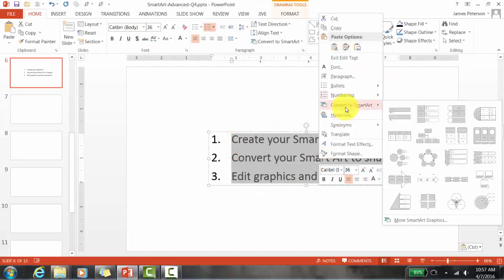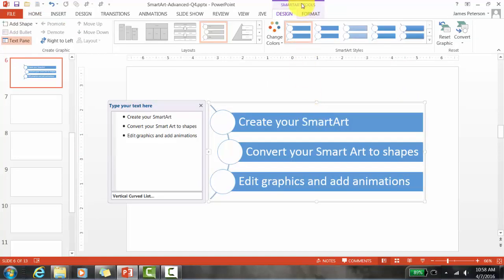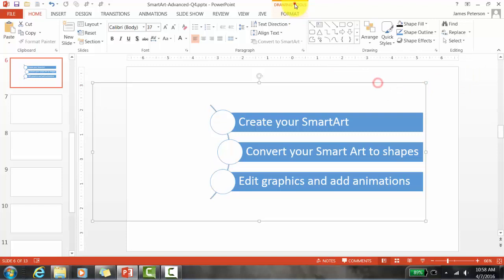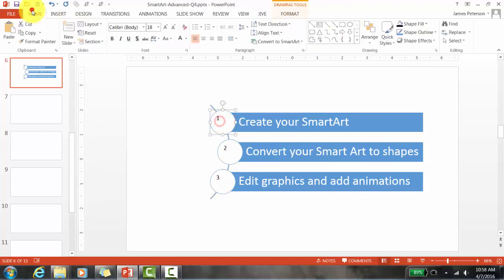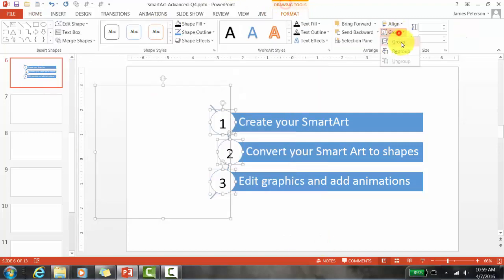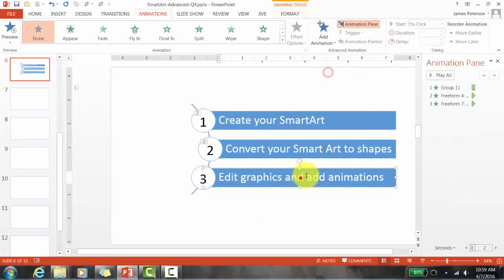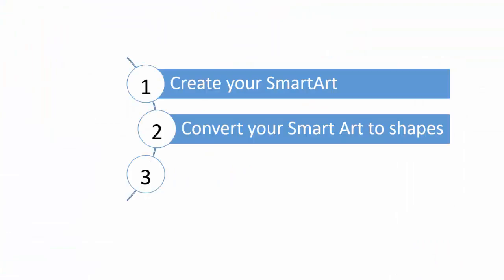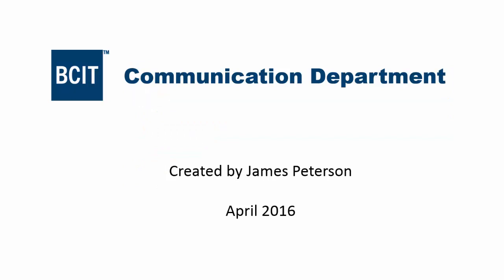Let's summarize. Step one is to create your SmartArt — I started with a list, right-clicked, and selected the SmartArt I wanted. Step two is to convert your SmartArt into a shape, and then ungroup that shape. Step three is to edit your graphics and animations as you like.